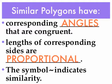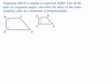So corresponding angles are congruent. The lengths of corresponding sides are going to be proportional, and this little squiggle symbol indicates similarity. Trapezoid ABCD is similar to trapezoid PQRS. List all the pairs of congruent angles and write the ratios of the corresponding sides in a statement of proportionality.